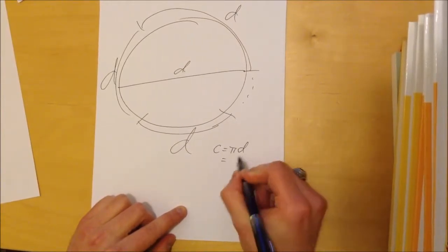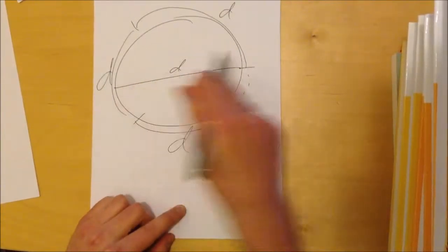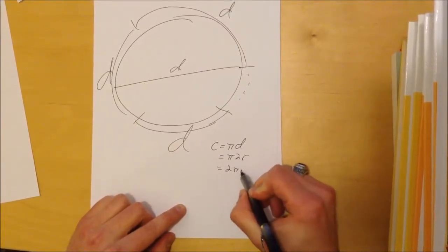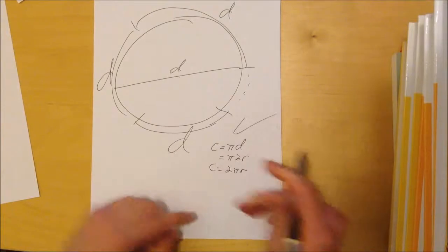Pi diameter. What is the diameter? Two radiuses, so two radii. So you get two R. So you get two pi R is your circumference. That's another way of seeing it.